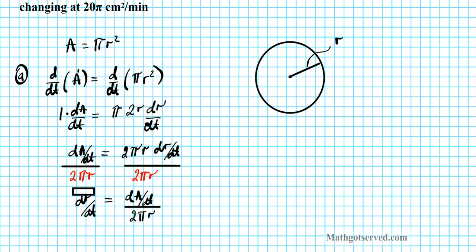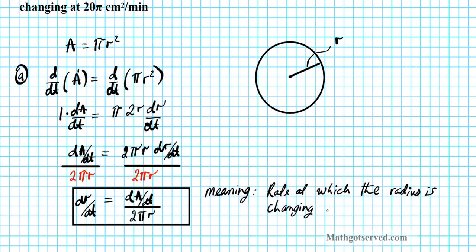So what's the meaning of this result? The dr/dt, meaning this is the rate at which the radius is changing at an instant, or instantaneous rate of change at a particular time.